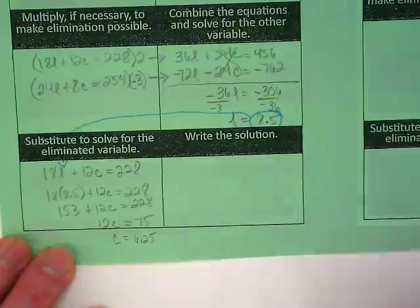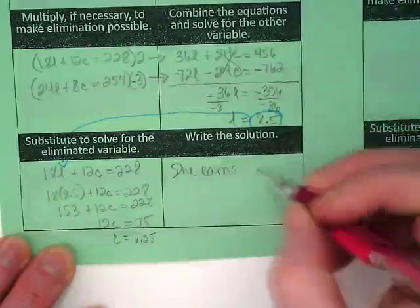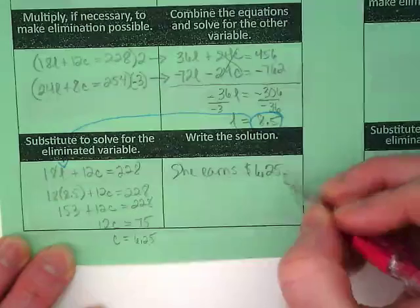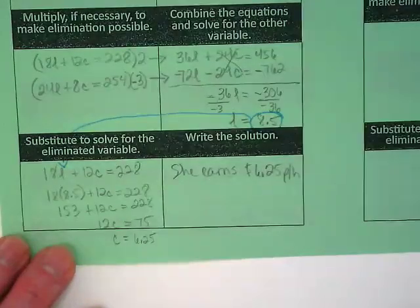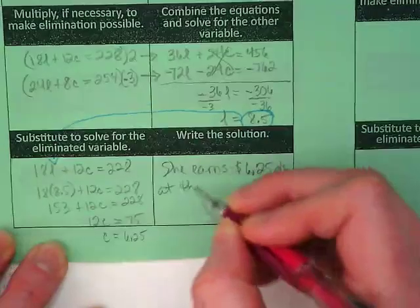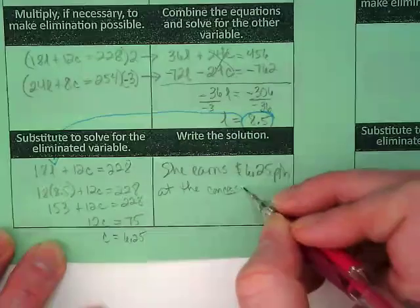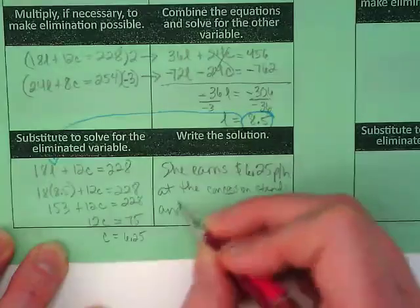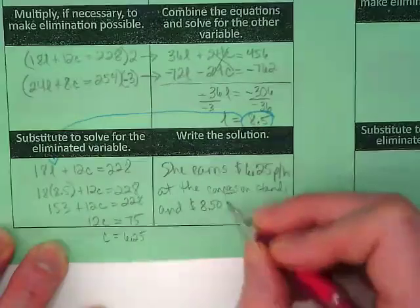So our solution, she earns $6.25 an hour at the concession stand, and $8.50 an hour lifeguarding.